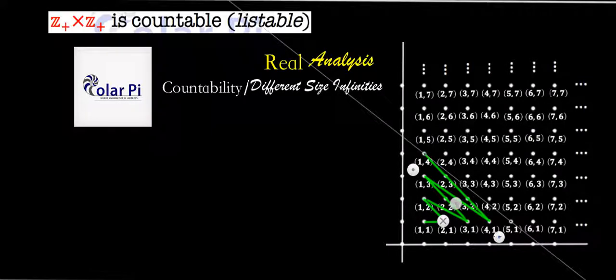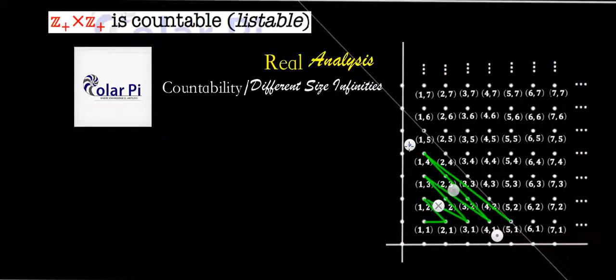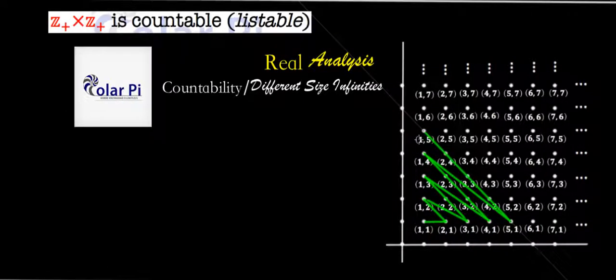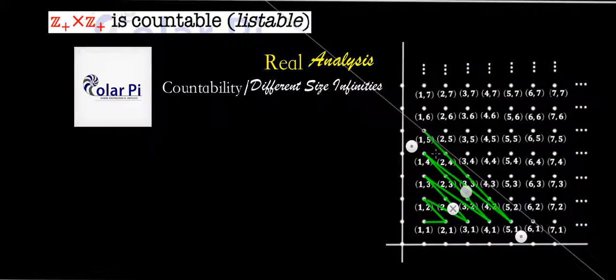I'll just do a few more. So next is like this way, right? 5, 1. And then from 5, 1, we're going to turn around and go to 1, 5, like this, going through 3, 3, 2, 4, and then 1, 5. And from 1, 5, we're going to turn around and come back here to 6, 1.